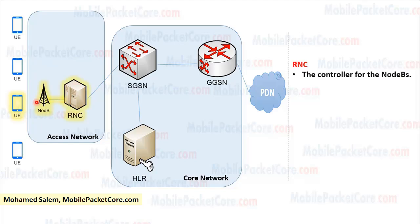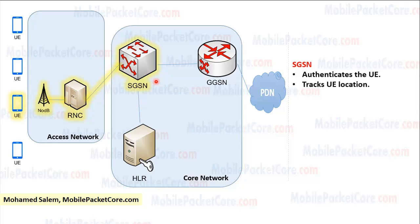The Node B connects to the RNC. The RNC works as the controller for the Node Bs. The RNC connects to the SGSN. The SGSN is the entry point for the core network. The SGSN authenticates the UE and tracks its location.